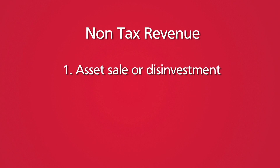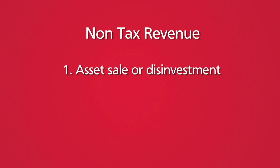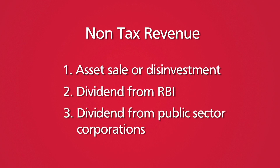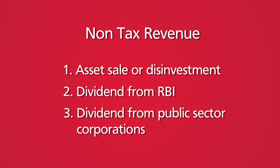Asset sale, or disinvestment as it's popularly known, is one way for the government to earn money. It disinvests its stake that it holds in large public sector companies. The other non-tax revenue for the government is dividends from the RBI and dividends from the corporations it owns stakes in.